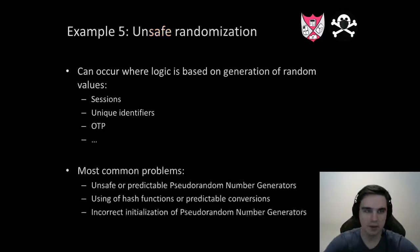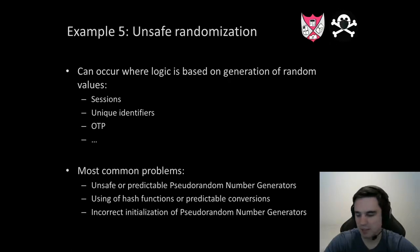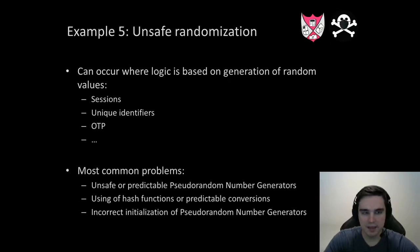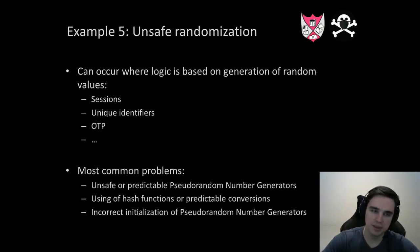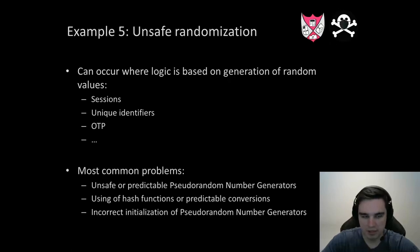The next vulnerability is unsafe randomization. You can meet it in applications where logic is based on the generation of random values — it can be sessions, OTP, or unique identifiers. The most common problem is using unsafe, predictable random number generators, or using predictable functions for creating sessions or unique identifiers. In any case where an attacker can recover the sequence of random values — for example, incorrect initialization of a random number generator — it becomes a problem.